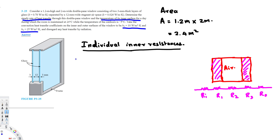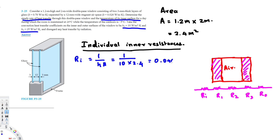First, R_indoor is a convection resistance, so we use 1 over h times area. The indoor heat transfer coefficient is 10 watts per meter squared Kelvin, so R_indoor equals 1 over (10 times 2.4), which gives 0.04167 degrees Celsius per watt.